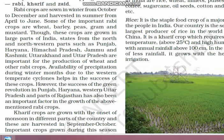Rabi crops are sown in winter from October to December and harvested in summer from April to June. Some of the important Rabi crops are wheat, barley, peas, gram, and mustard. These crops are grown in major parts of India.